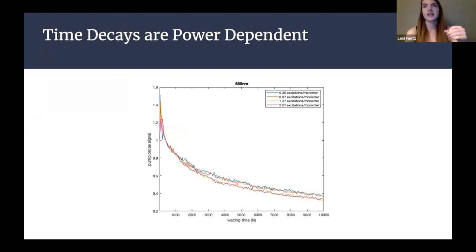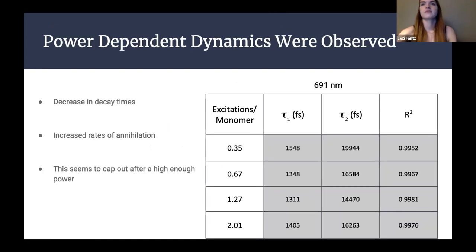Here we can see a few different decay time traces. We want to look at these versus power which here are converted to excitations per monomer, which is basically how many of those little dots I mentioned in every one of those monomers. We can see here that at lower powers, these two that are overlapping, they decay a little bit slower, whereas the higher powers had a faster time decay which is likely due to the higher rates of annihilation. Let's look at this in a table though.